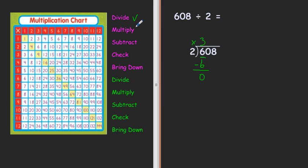6 minus 6 is 0. So I multiply, then I subtract. Now I check. Is 0 less than 2? Yes, it is. So I checked my check.